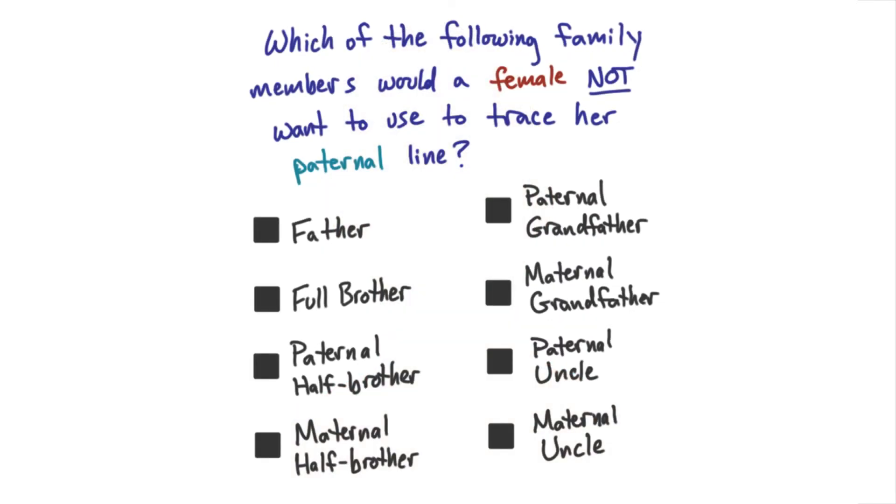This means that if you're a female, you can actually submit a DNA sample and you'll get information about your maternal and paternal lines because you have both mitochondria and a Y chromosome. But if you're a female, you only have mitochondria, so you can't get your paternal information just from your own DNA sample — you're going to have to use someone else in your family. Which of the following relatives would you not want to use if you're a female and you want to get information about your paternal lineage?